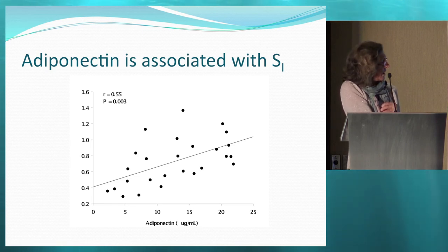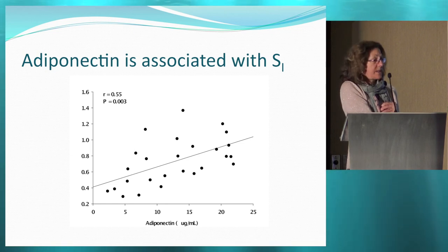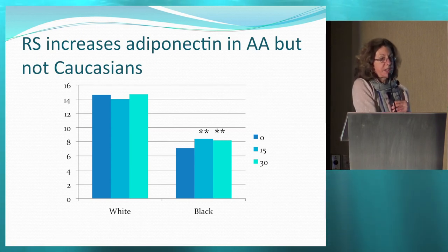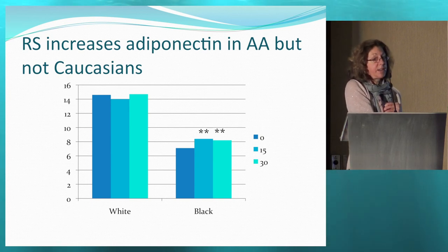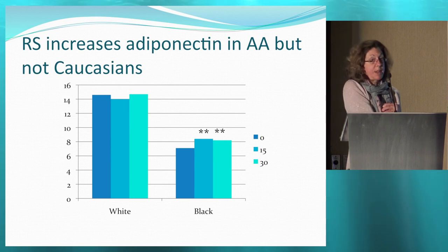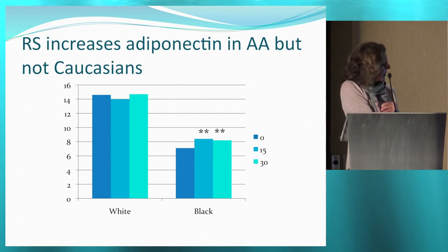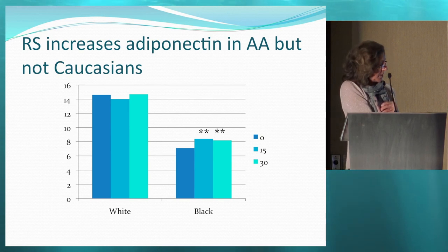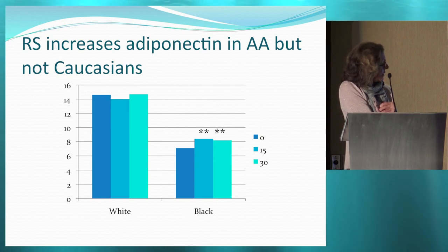Here are the data from the black women: with both doses of resistant starch — 15 and 30 grams — we got a significant increase in adiponectin, and nothing in the white women. We and others have observed strikingly lower insulin sensitivity in African-Americans. The black women in our study also had lower adiponectin — about two-fold lower — with white women averaging about 14 micrograms per mL and black women about 7.